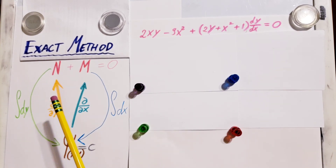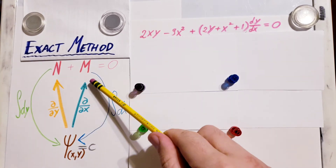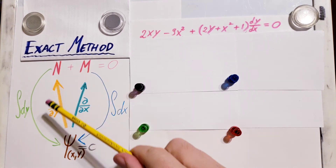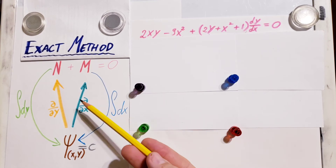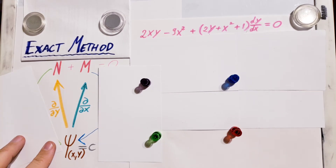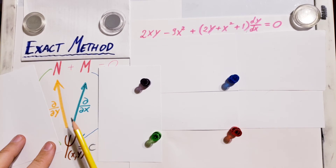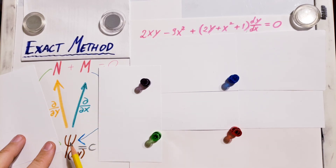What you see here is that we are going between two functions — deriving, integrating, deriving, integrating. The only difference is that we are using partial derivatives, not the regular ones. This is a parent function, and if we take a partial derivative with respect to x it gives us M, and if we take a partial derivative with respect to y it gives us N.